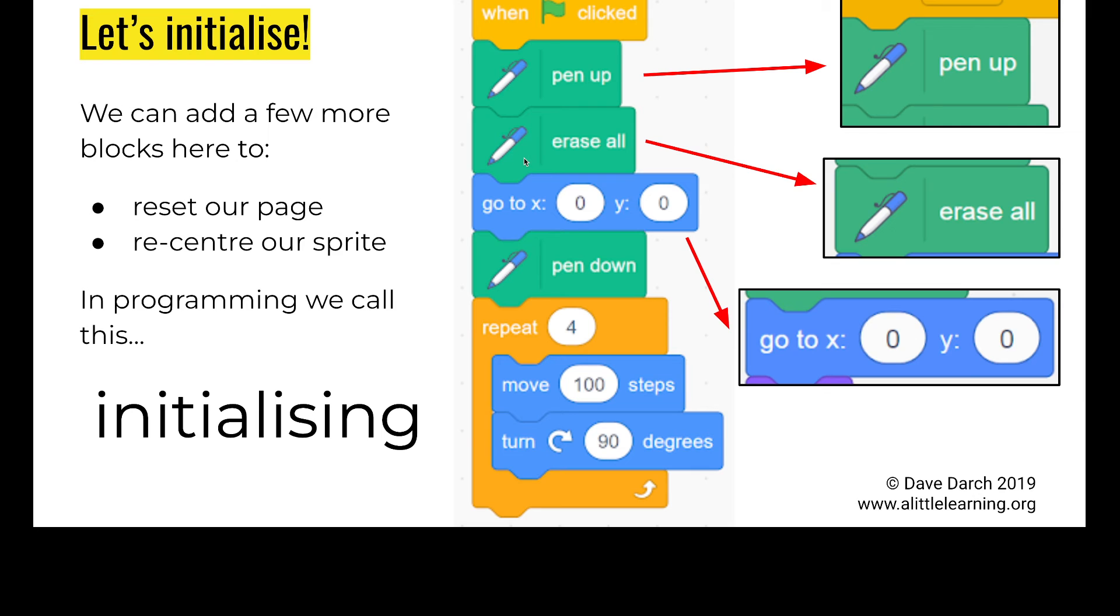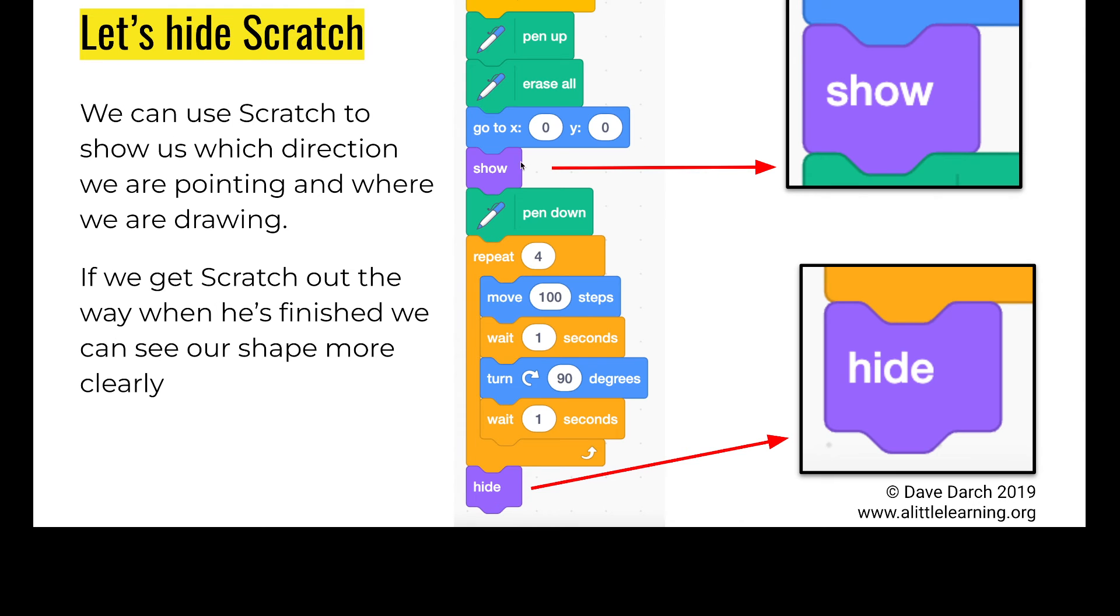These are under looks. Let's go back here. Under looks, we're going to go to show and pop that just before the pen comes down, so that we see Scratch all the way throughout our main loop. But then when our main loop is repeated and done four times, we're going to hide, and then Scratch will get out of the way so we can see our shape.